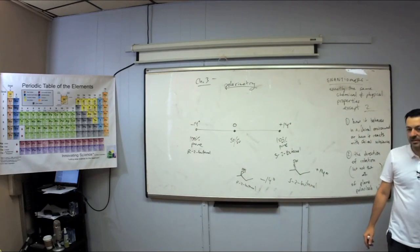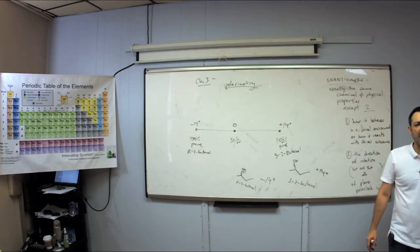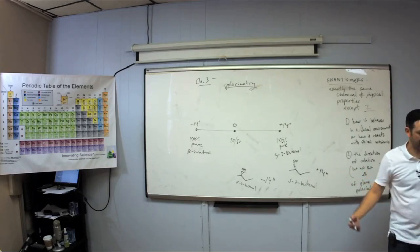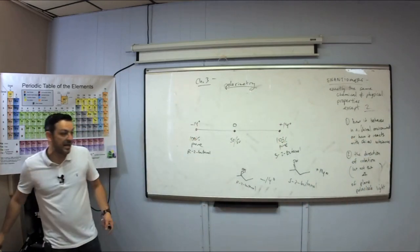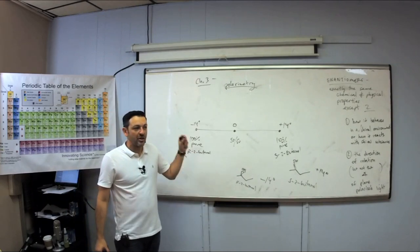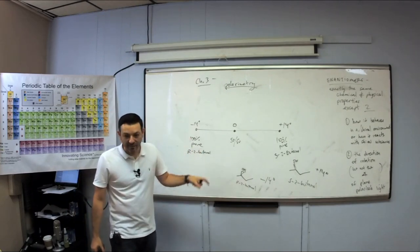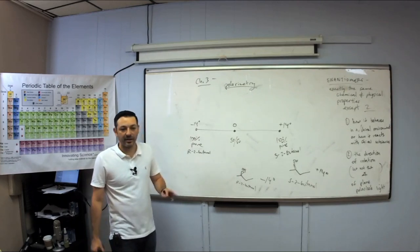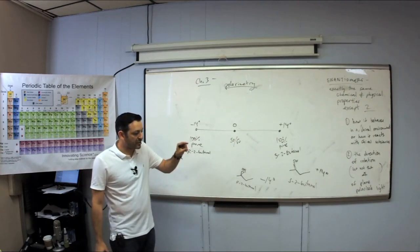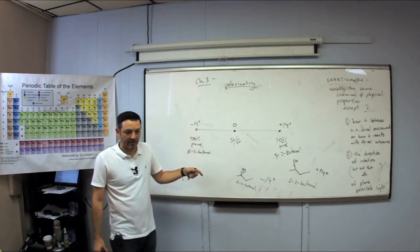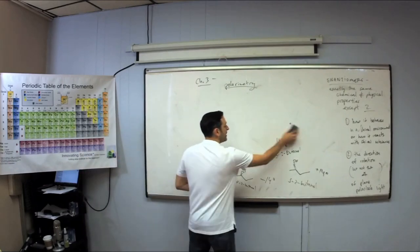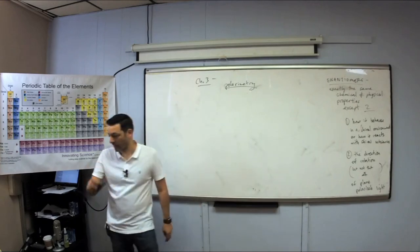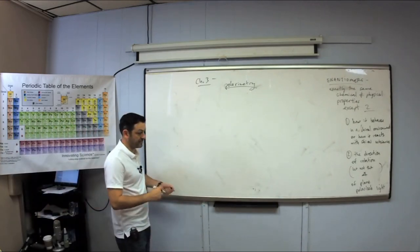Think of it as a number line. If I had a 100% pure R-2-butanol sample, the rotation would be negative 14 degrees. If I had a 100% pure S-2-butanol sample, it rotates light positive 14 degrees. A 50-50 mixture rotates zero degrees. Could I have a mixture that rotates 7 degrees? Negative 3 degrees? You can't go more than 100%, but you could have every percent in between. And we need to be able to do these calculations — because in Orgo 2, Chapter 25, there's a paragraph that assumes you know how to calculate all this stuff.